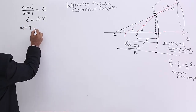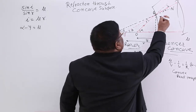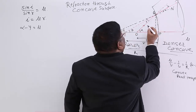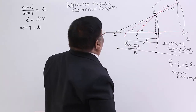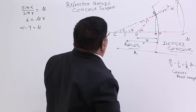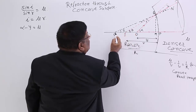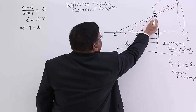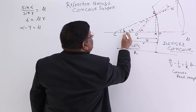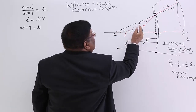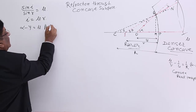So alpha minus gamma equals mu times R. Now for angle R: in triangle C-I-Q, beta is the external angle, so beta equals gamma plus R, therefore R equals beta minus gamma.